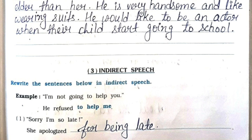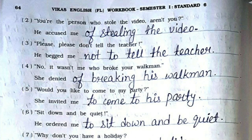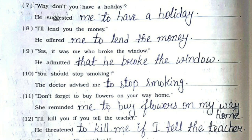Rewrite the sentences below in indirect speech. First: she apologized for being late. Second: he accused me of stealing the video. Third: he begged me not to tell the teacher. Fourth: she denied breaking his walkman. Fifth: she invited me to come to his party. Sixth: he ordered me to sit down and be quiet. Seventh: he suggested me to have a holiday. Eighth: he offered me to lend the money. Ninth: he admitted that he broke the window. Tenth: the doctor advised me to stop smoking. Eleventh: she reminded me to buy flowers on my way home.